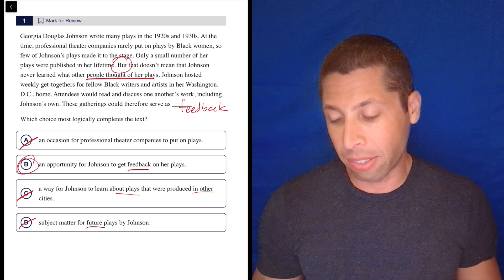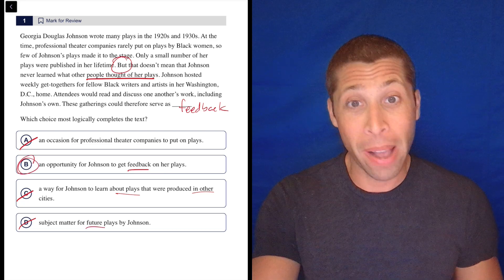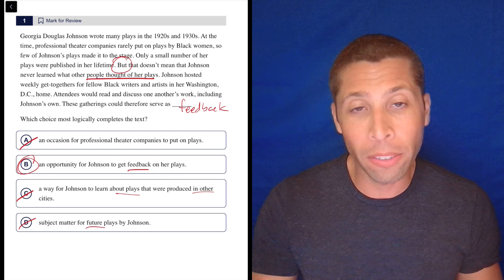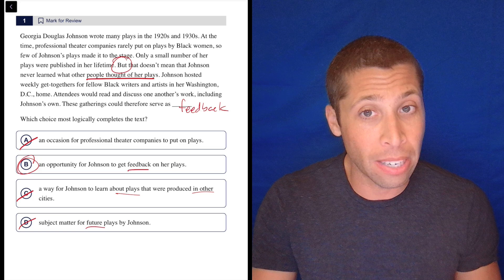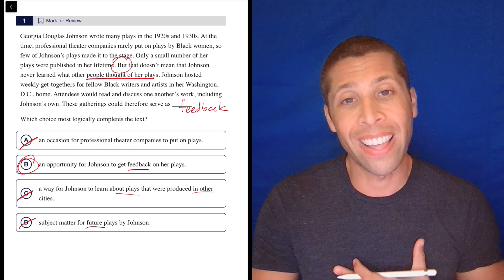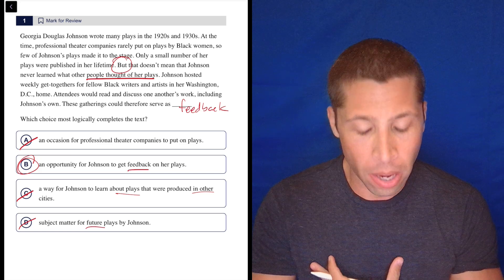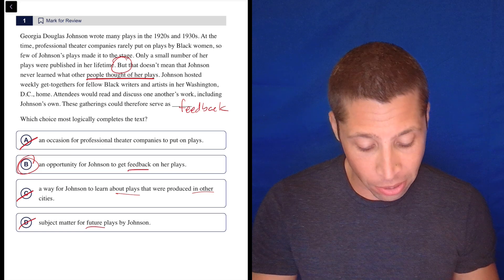So look, this is an obvious answer here because it matches my dumb summary. But even still, for all of these wrong answers, I'm thinking of some of the most common trap answer reasons that we see on the SAT. And yes, even for easy questions where you might just have that intuitive sense that a choice is wrong, we can still link it back to those patterns.